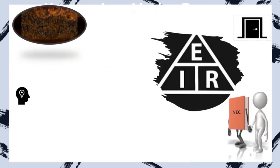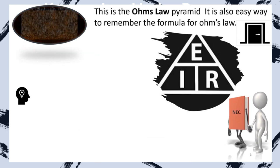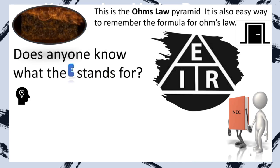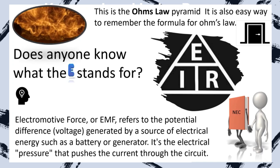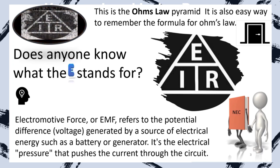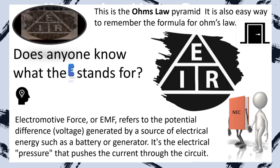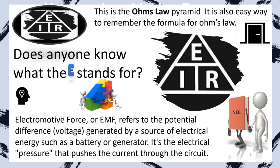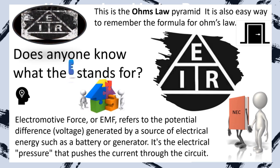This picture I keep showing you is the Ohm's Law Pyramid. It's also an easy way to remember the Ohm's Law formula. The E stands for electromotive force. It refers to the potential difference generated by a source of electrical energy, such as a battery or generator. It's the electrical pressure that pushes or pulls the electrons through the circuit. Just remember that the E stands for voltage.